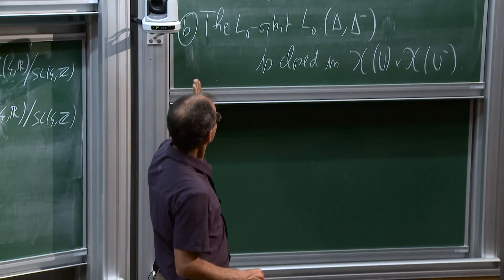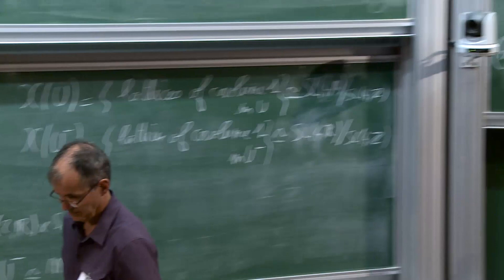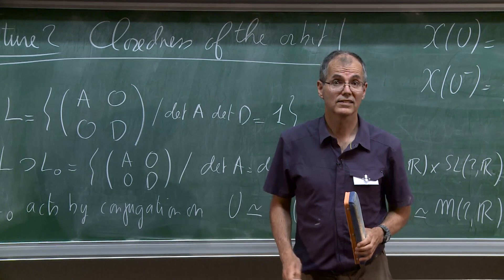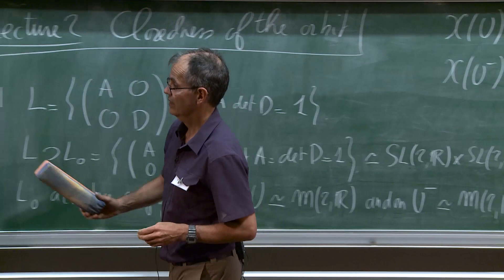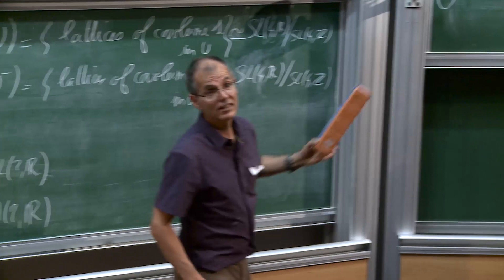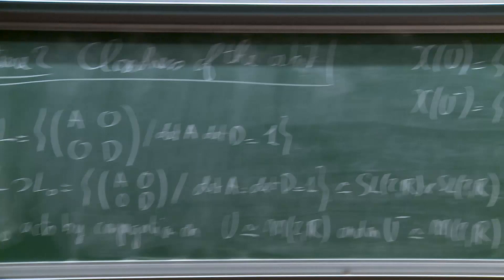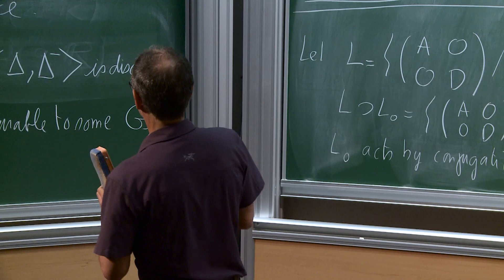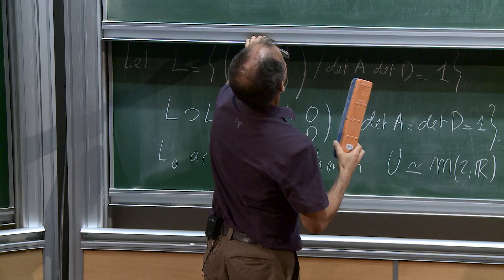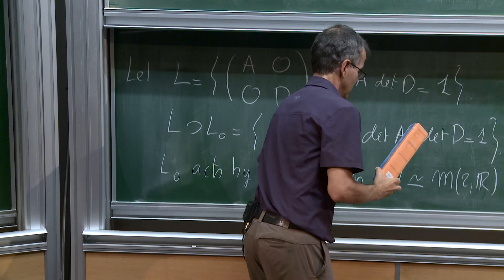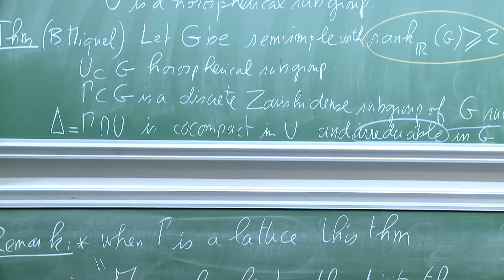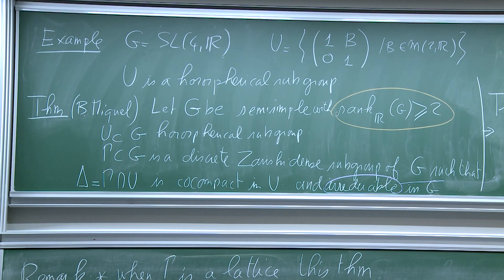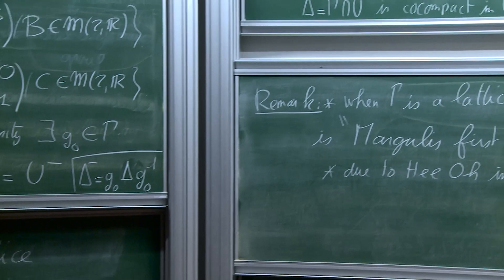Now I want to explain how to prove that this orbit is closed. Question: can you explain again how this theorem is a special case? Instead of a semi-simple group, I take SL₄(ℝ), and instead of U, I take this U here. Your question is maybe: here I have just one unipotent — how do you get from one to two unipotents?